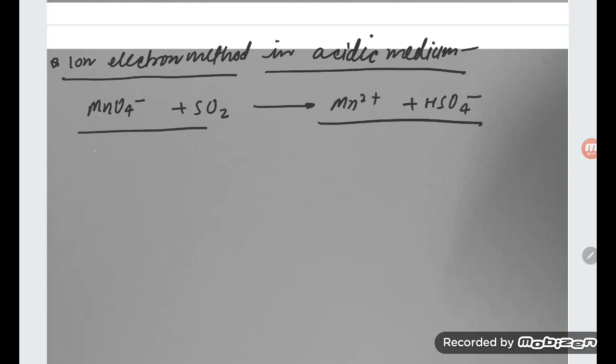First of all, what we need to do student, we should calculate the oxidation number. Here oxidation number, you see, plus 7 is there. It is converting into plus 2. So this is the reduction. And here plus 4 is there, and this is plus 6. So plus 4 to plus 6 increase, that is oxidation.